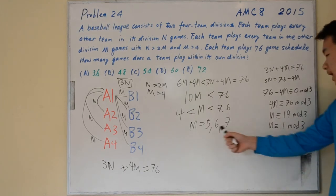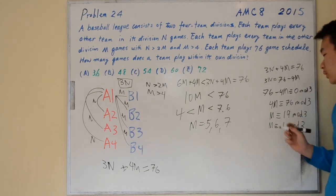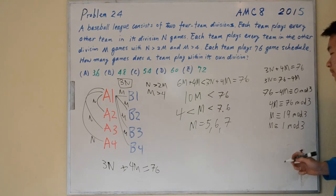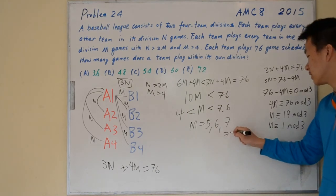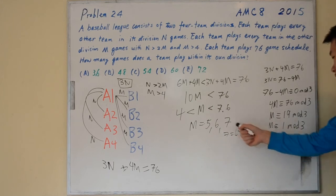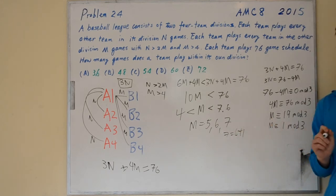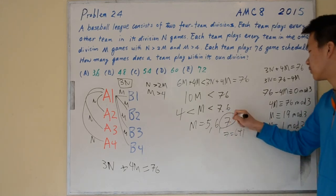Now we look at our 3 different choices. Which one is congruent to 1 mod 3? 7 is equal to 6 plus 1, so 7 is the only one congruent to 1 mod 3. So M equals 7.